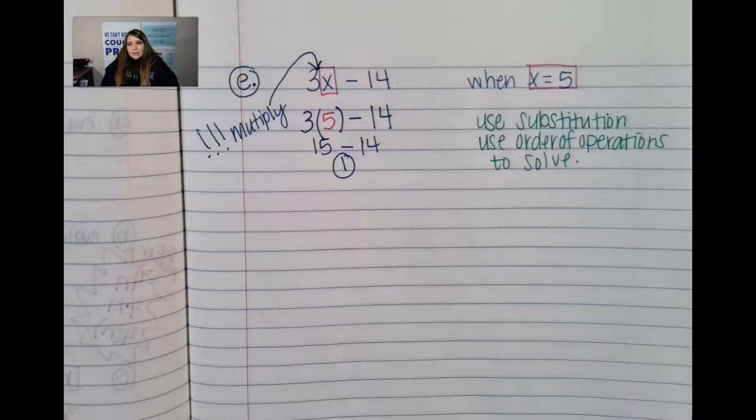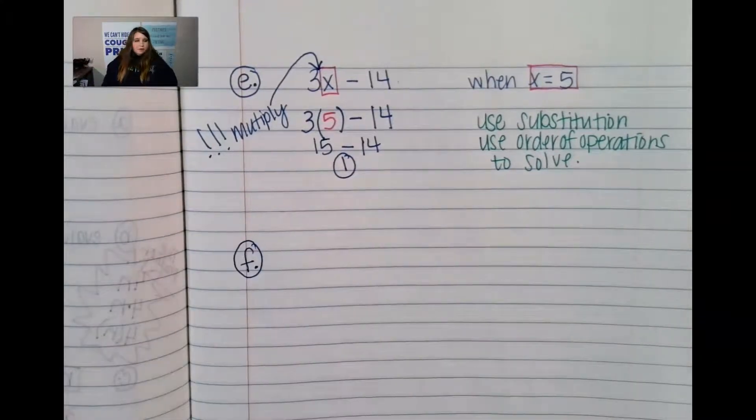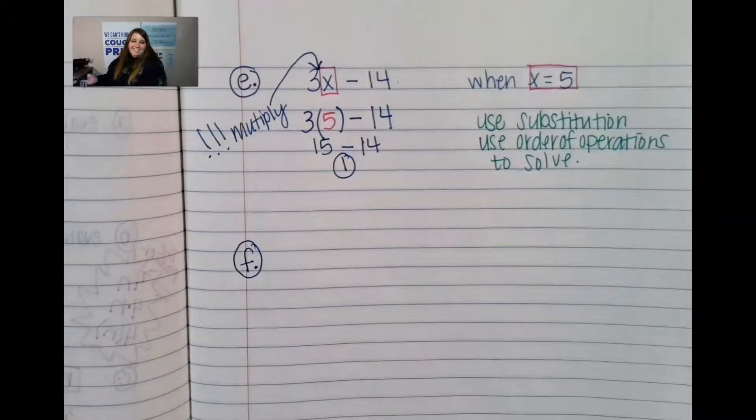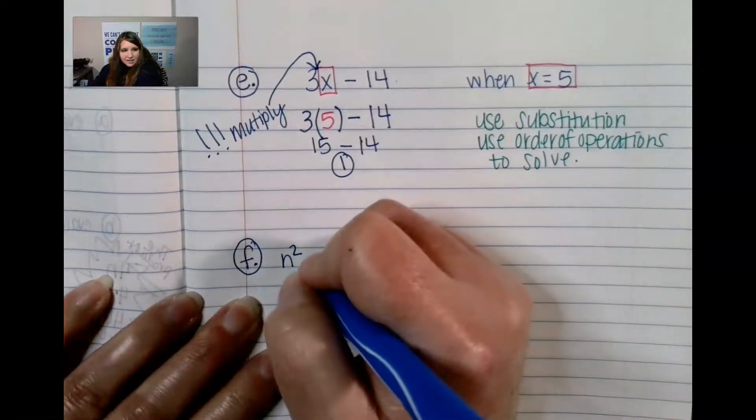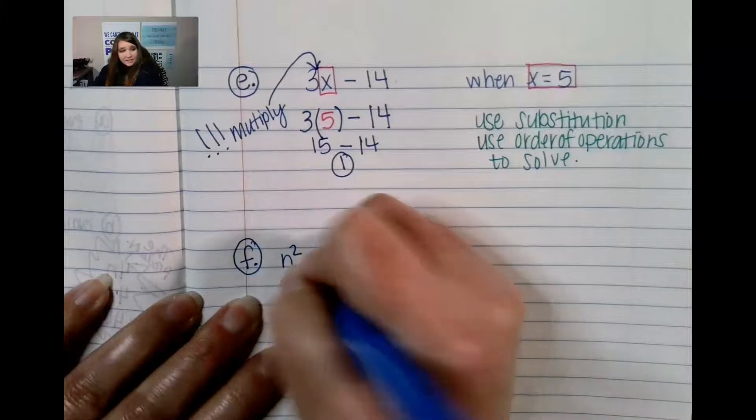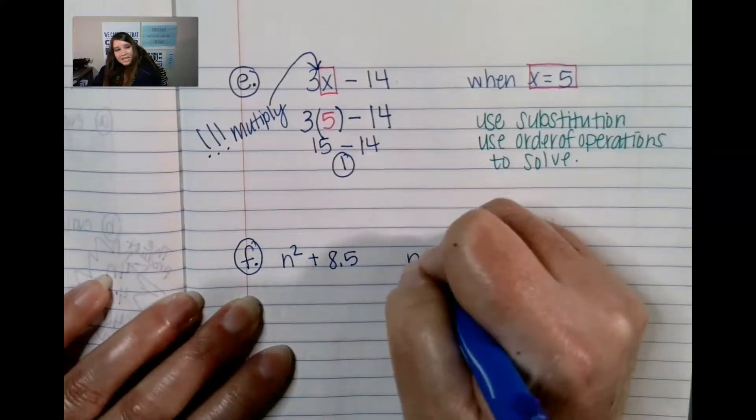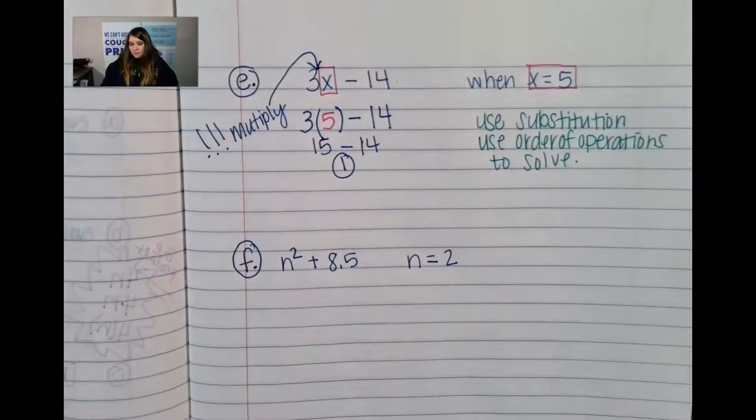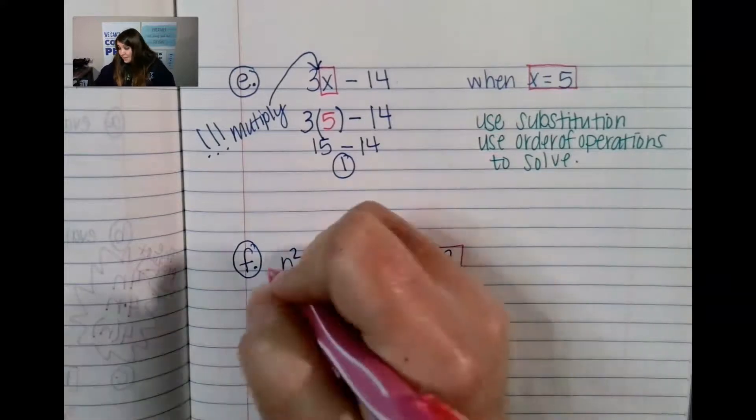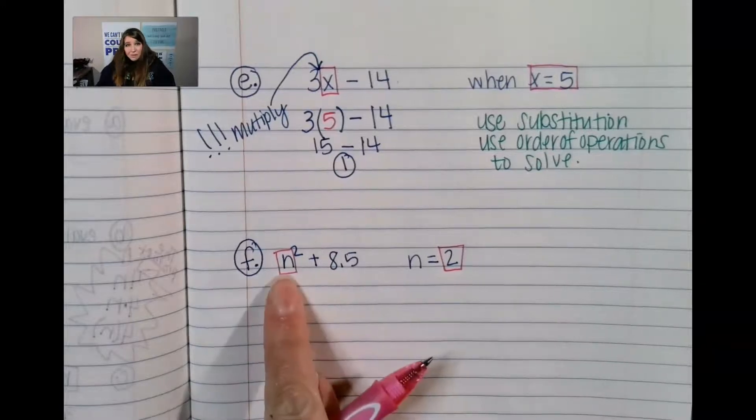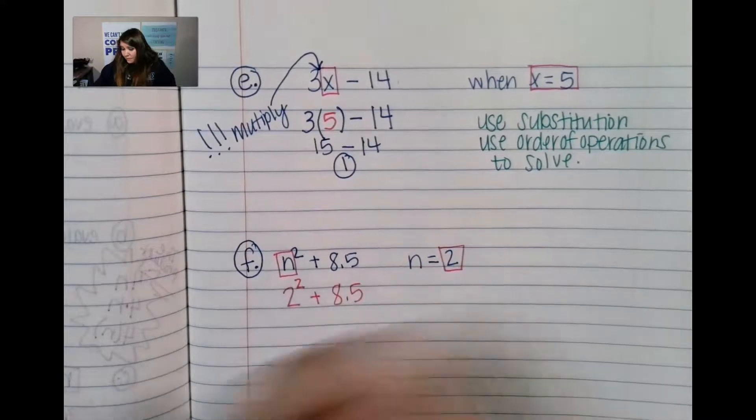And our very last example before I give you a try it to do. Example F for finally. She's almost done. All right. It says N squared. So, here we're doing stuff from yesterday. N squared. Plus. Eight and a half. When N equals 2. So, again, we're just going to take this N and it says it equals 2. So, I'm just going to put N equals 2 right here. It's all about the 2. So, this is 2 to the power of 2 plus 8.5 exponents.